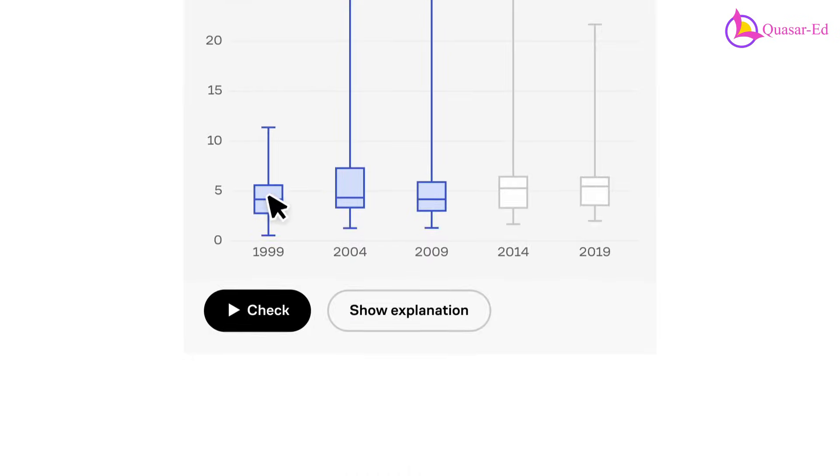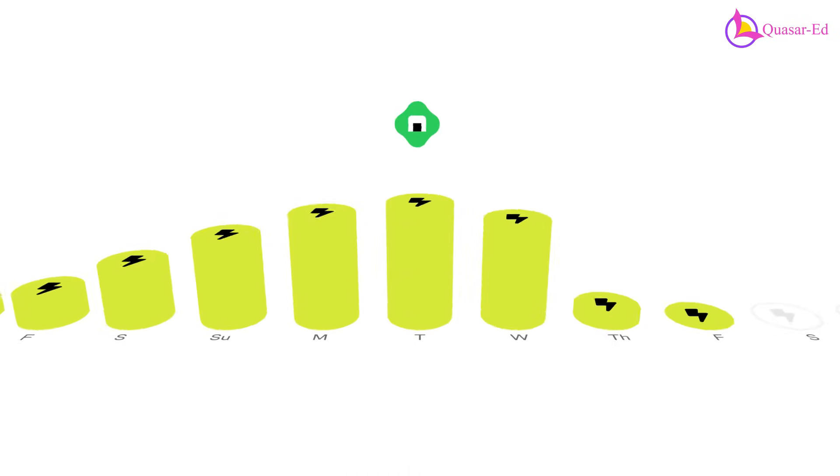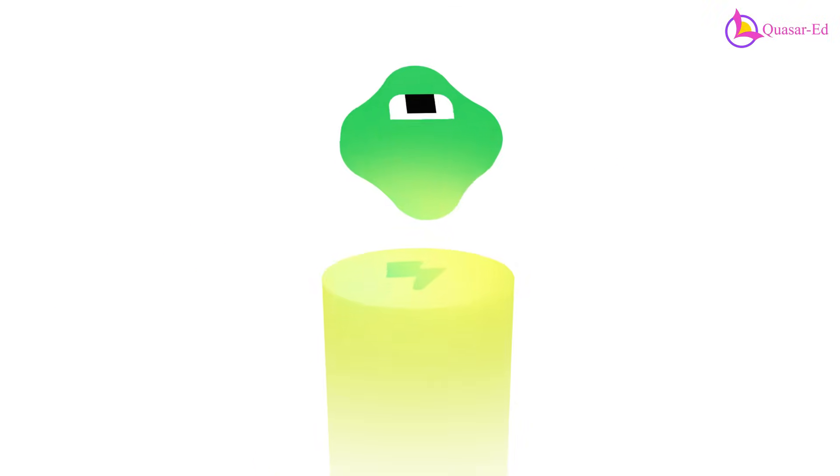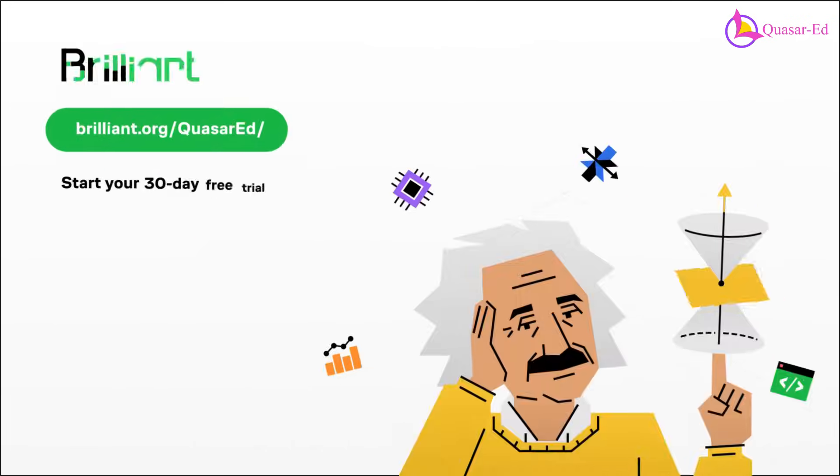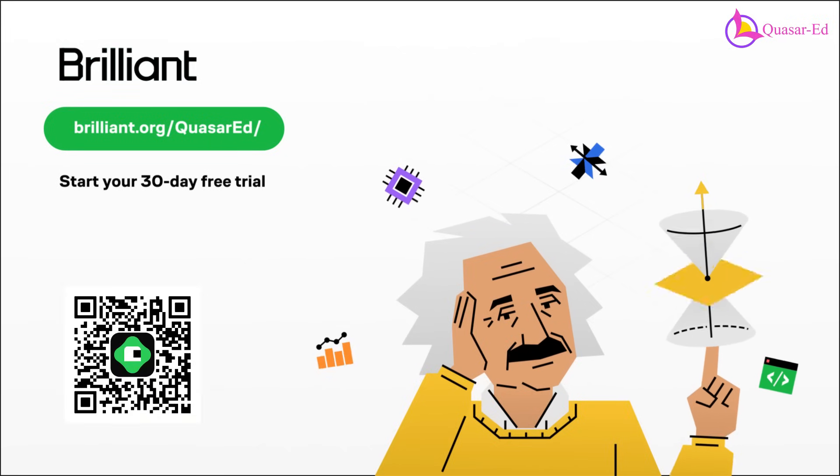If you're ready to unlock new skills and challenge your mind, you can try Brilliant free for 30 days by visiting brilliant.org slash Quasared or scanning the QR code on the screen. Plus, you'll get 20% off an annual premium subscription.